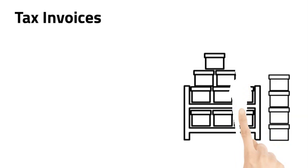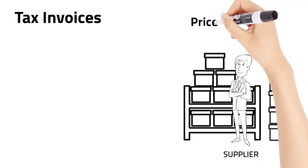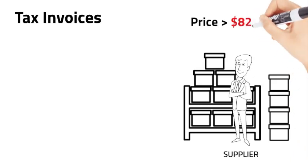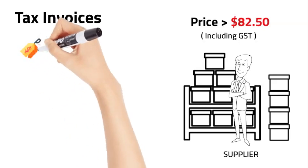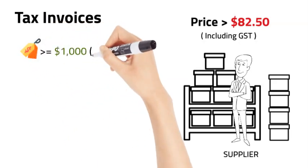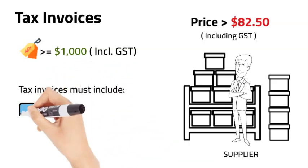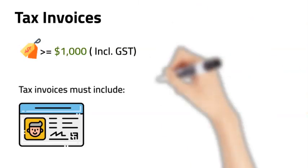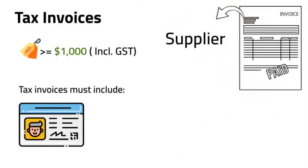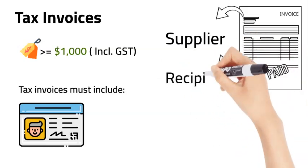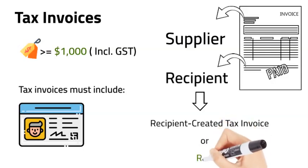Tax invoices: a supplier must provide a valid tax invoice if the supply is for a price exceeding $82.50 including GST, and the purchaser requests it. Where the price of the supply is $1,000 including GST or more, the tax invoice must include the buyer's identity or ABN. Normally tax invoices are issued by the supplier, but in some cases the recipient can create the tax invoice. This is known as a recipient-created tax invoice, or RCTI.